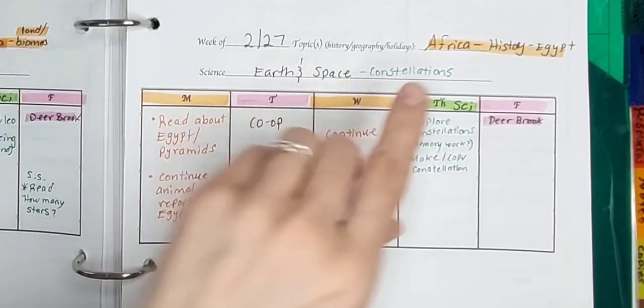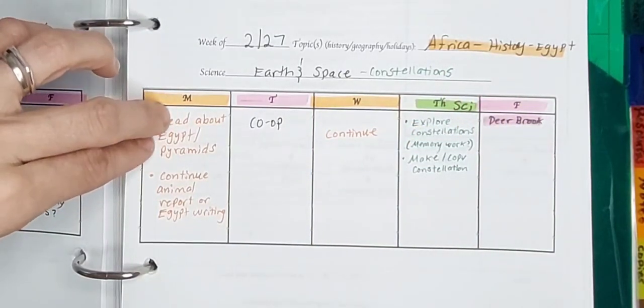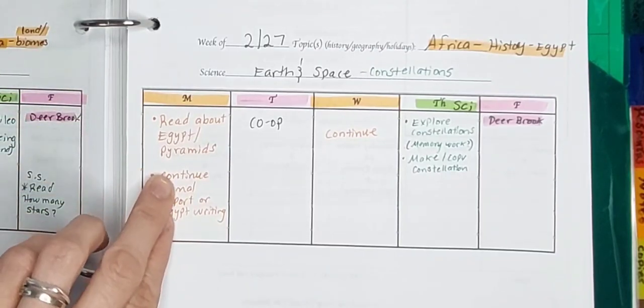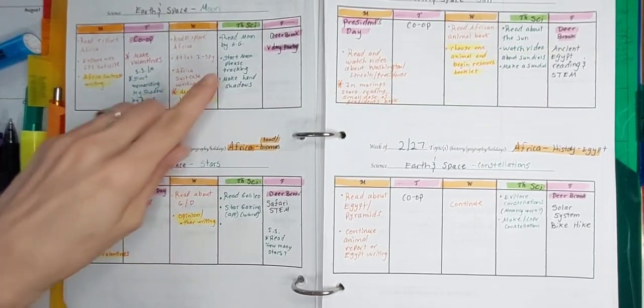Last week is going to be Africa, the history focused on ancient Egypt. So we'll read about Egypt, the pyramids. And he'll probably continue his animal writing. And that will be that week.